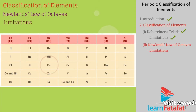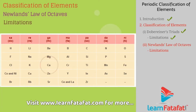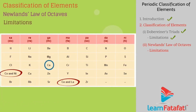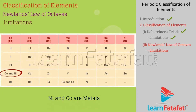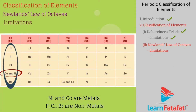Limitations: It is applicable only up to calcium but not after that. He filled two elements in the same slot in a column, but these elements have different properties from elements of that column. For example, Ni and Co are metals which are placed with non-metals F, Cl, Br.